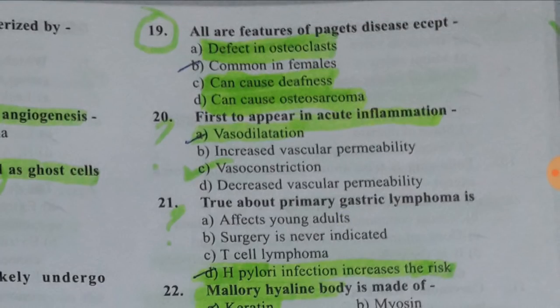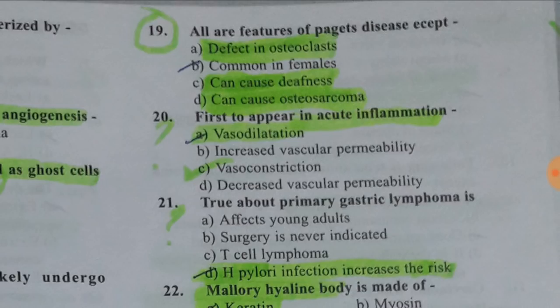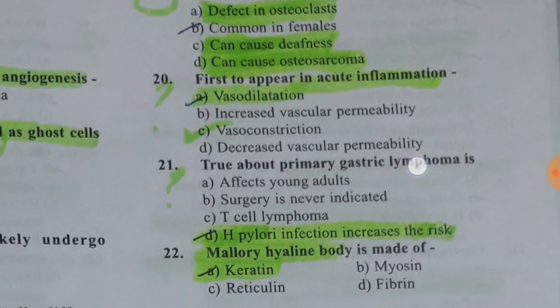Regarding Paget's disease — if you don't know the answer, rule out options: defect in osteoclasts yes, can cause deafness yes, can cause osteosarcoma yes, but it is not more common in females. The first cell to appear in acute inflammation is a slightly controversial question.